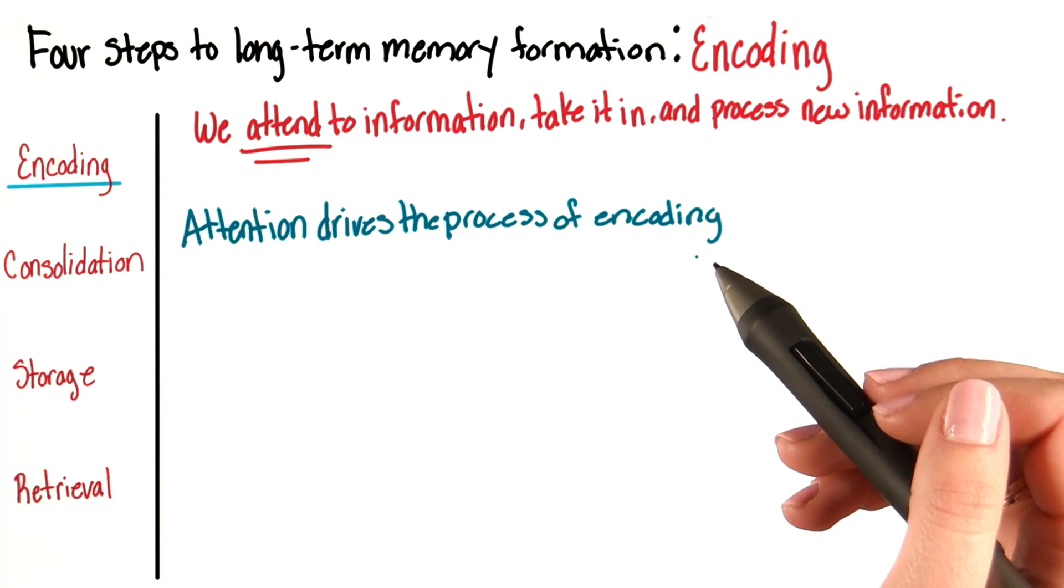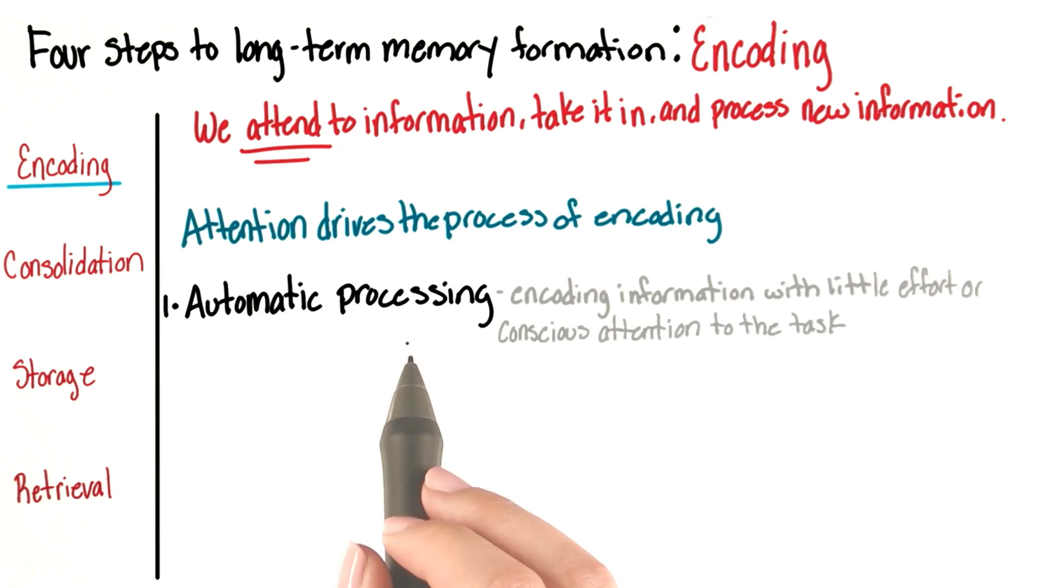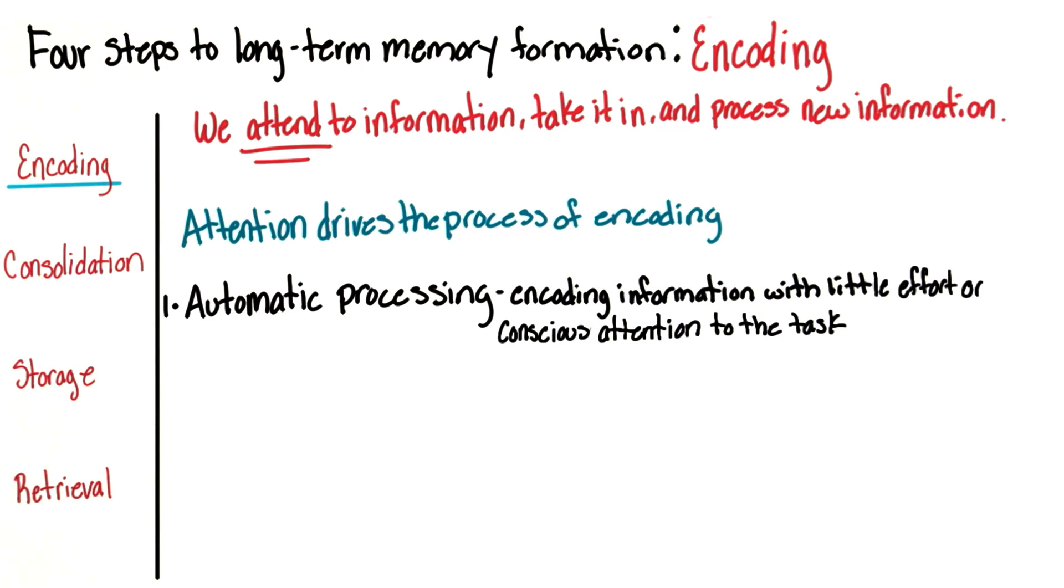Now there are two types of encoding. One type of encoding is termed automatic processing. As the name implies, it refers to encoding information that occurs with little effort or conscious attention to the task.